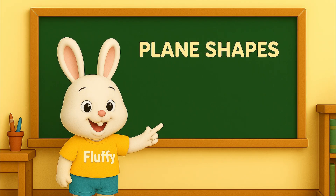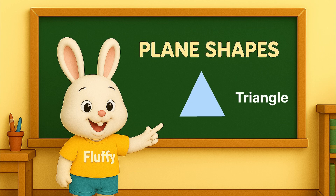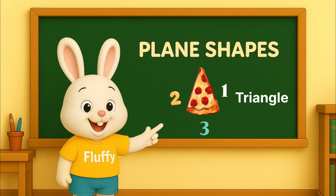Now let's look at some plane shapes. Triangle. A triangle has three straight sides — one, two, three. It looks like a slice of pizza. Yummy.